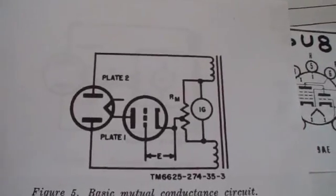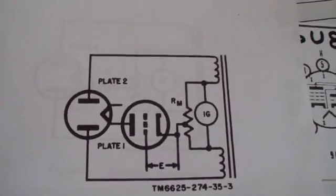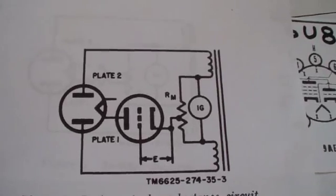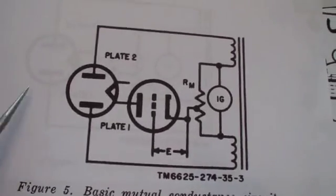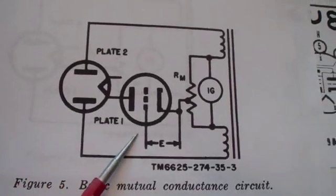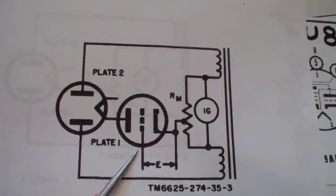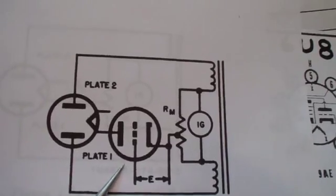How do they do that? Well, what they do is they put the tube under test in the middle. That's the load resistor. They apply a fixed bias to this grid. Then, they also apply an AC signal.